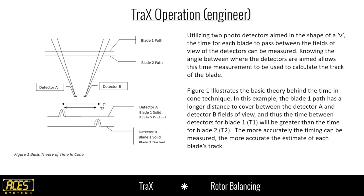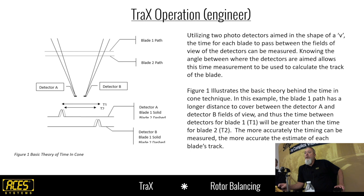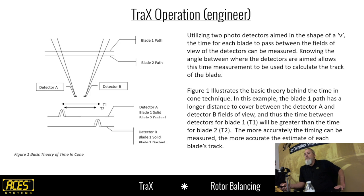This is a picture from the patent submitted for the TRACS — it's basically showing time in cone. There are two field-of-view detectors, or photo detectors, in the TRACS. The longer the blade is in the cone, the higher it is. That's what it's measuring — how long the blade stays in the cone. Blade one is in the cone longer as the cone gets wider toward the top. That's how the TRACS identifies and measures the track of the blades. Pretty cool concept.